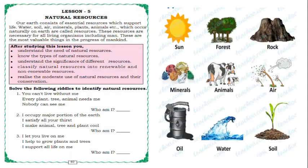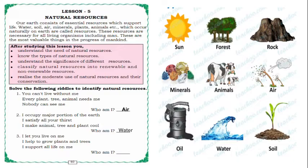Here some riddles are there on natural resources. You can't live without me. Every plant, tree, animals needs me. Nobody can see me. Who is this? Yes — air. I occupy major portion of the earth. I satisfy all your thirst. I make animal, tree and plant cool. Who is this? Water. I let you live on me. I help to grow plants and trees. I support all life on me. Who is this? Earth.